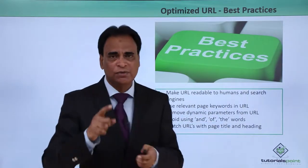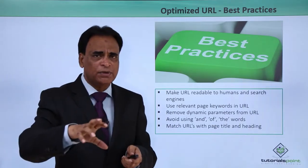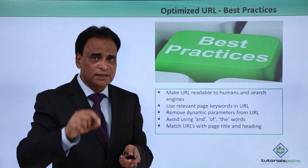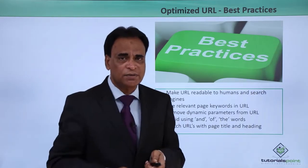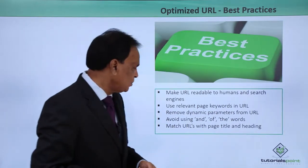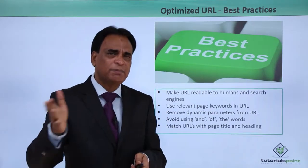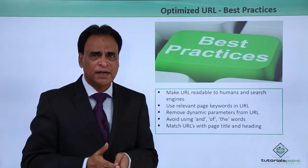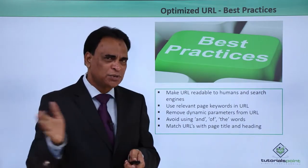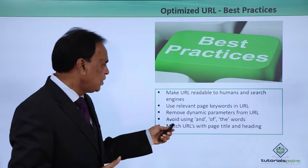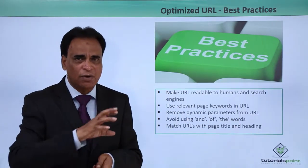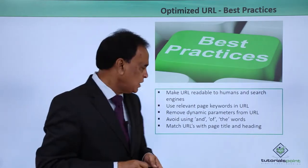Use relevant page keywords in the URL. When you are talking about a particular subject on a particular page of a website, the keywords for that content and information have to be present in the URL. Remove dynamic parameters from the URL — when you are building a dynamic website, dynamic parameters come into the URL, so make sure you eliminate them. Avoid using common filler words in the URL, as they do not add value.